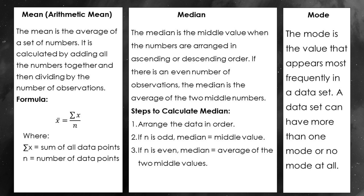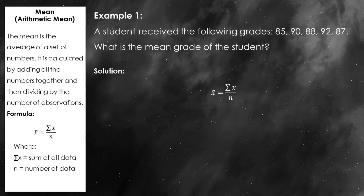Your data set can have more than one mode or even none at all. Now that we've got the definitions down, let's roll up our sleeves and see how to calculate these measures. For the mean, we'll use the formula that most of you are already familiar with: X-bar, or mean, equals the summation of X all over N. This just means we sum up all our data points and divide by the number of data points.